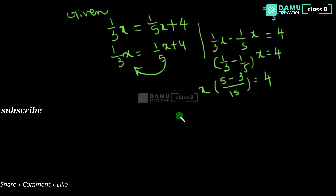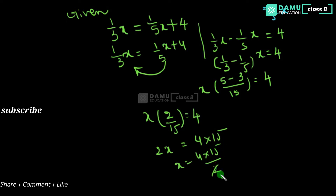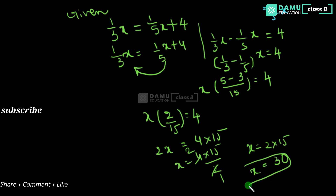So what value we get here is x into 2/15 will be equal to 4. Then x will be equal to 4 into 15 by 2. Cancel 2: x will be equal to 2 into 15, that is 30.